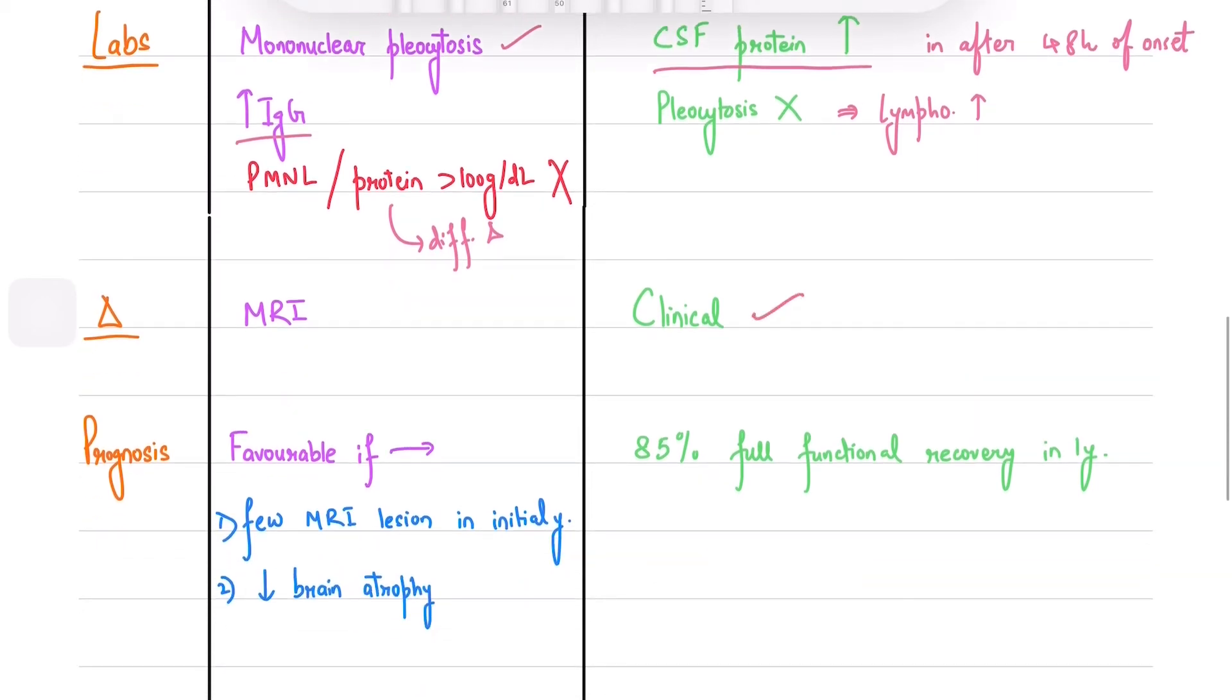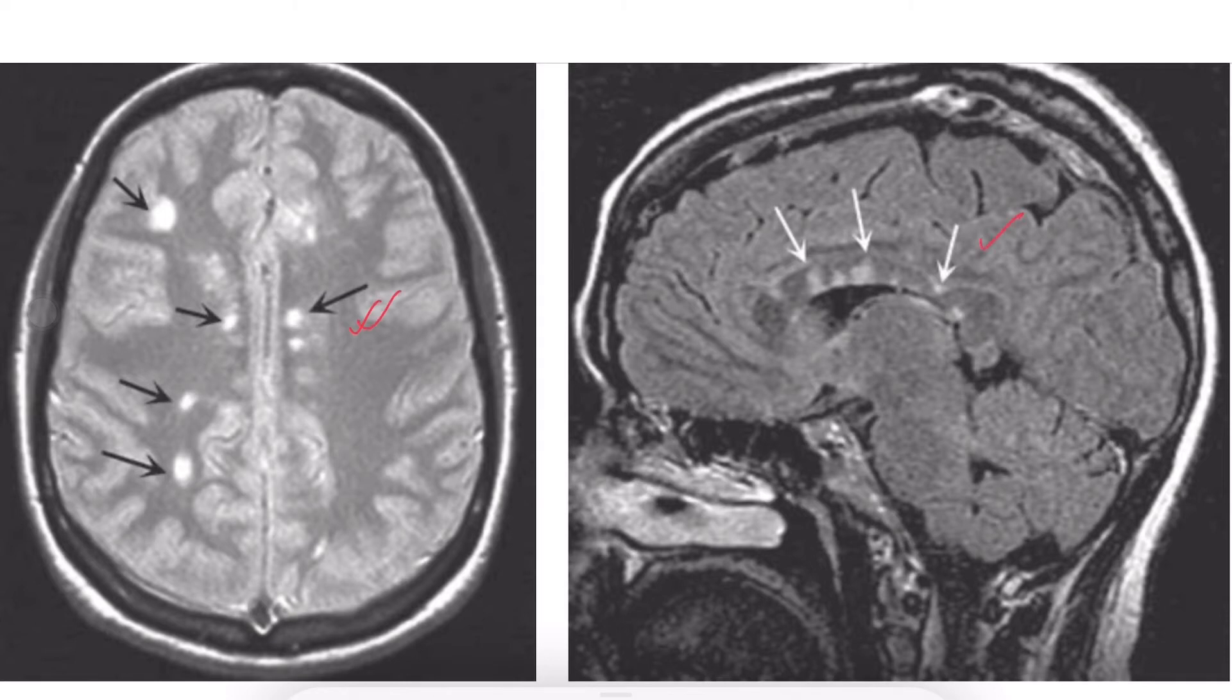A clinical diagnosis is sufficient for GBS and treatment is started without waiting for confirmatory lab tests and electrodiagnostic tests. For MS, MRI can detect 95% of cases and you will see multifocal lesions in the brain, brainstem, and spinal cord.